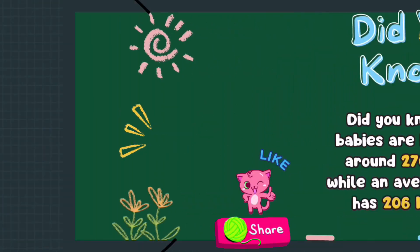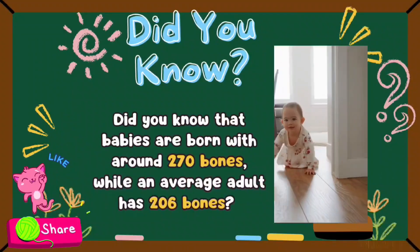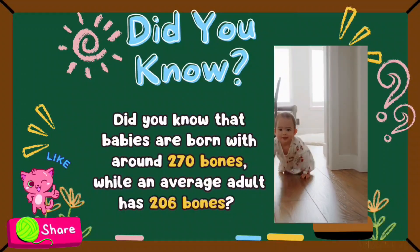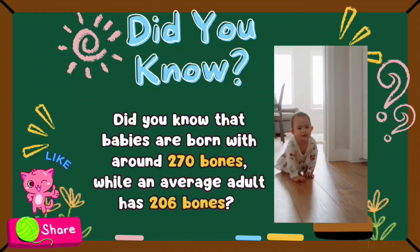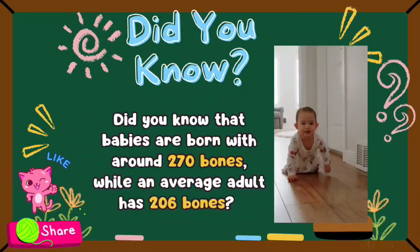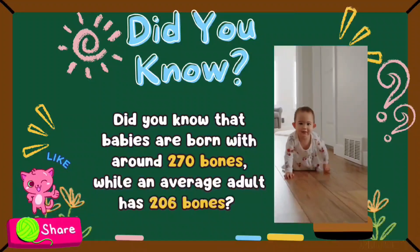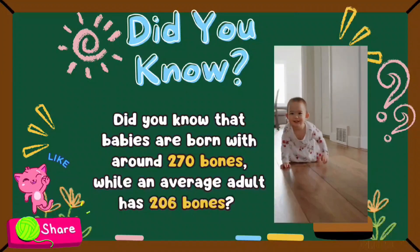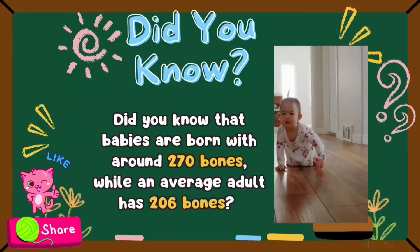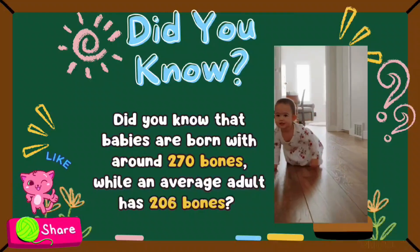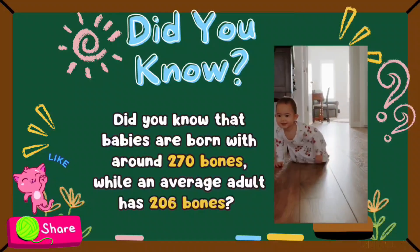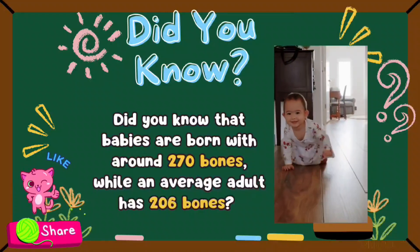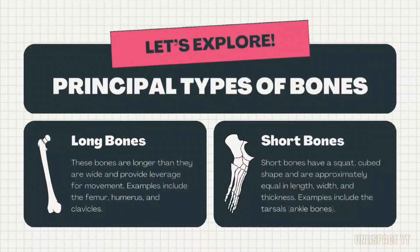Trivia time! Did you know that babies are born with around 270 bones, while an average adult has 206 bones? Amazing, right? Let's explore!